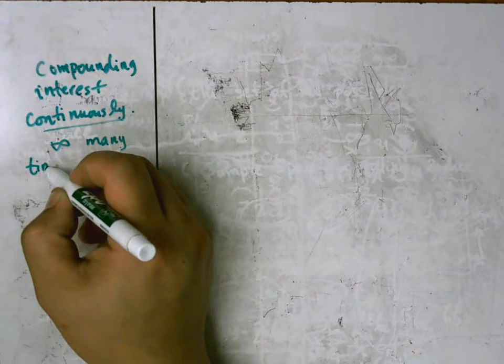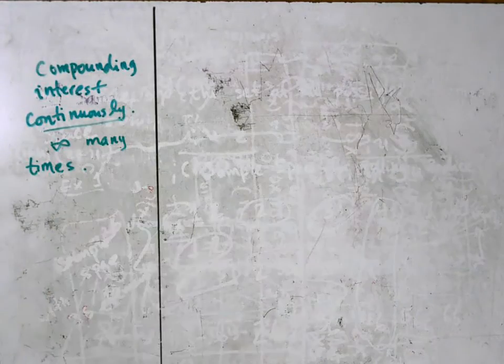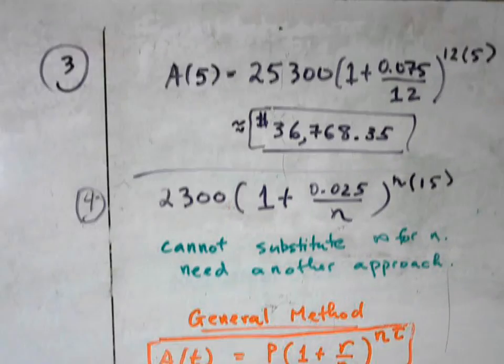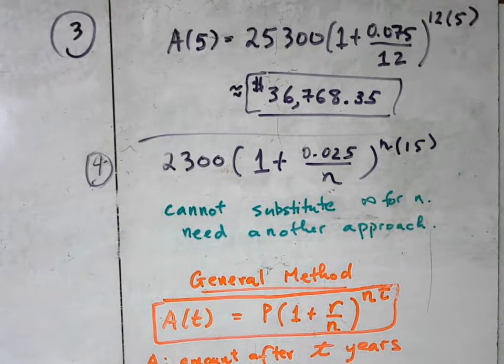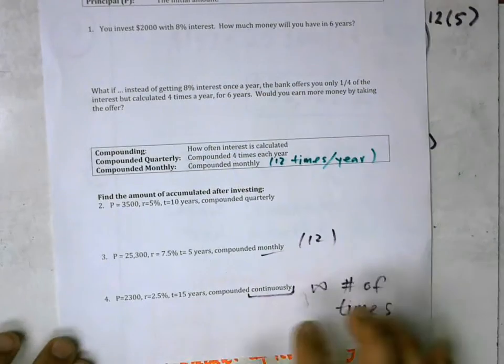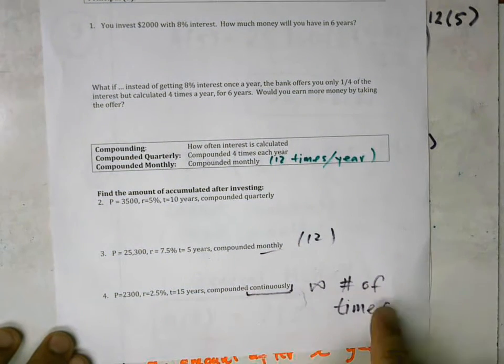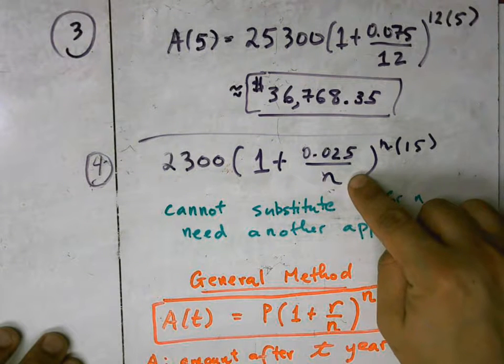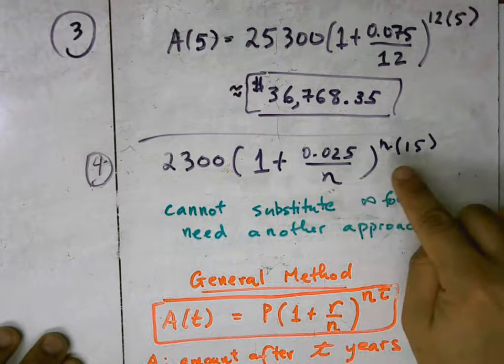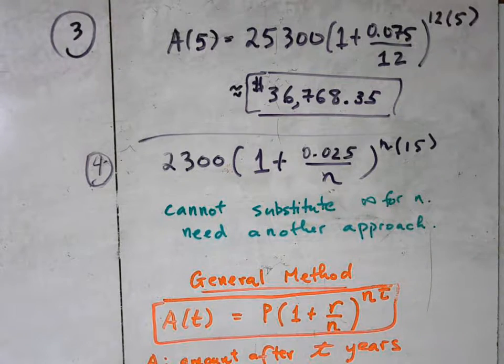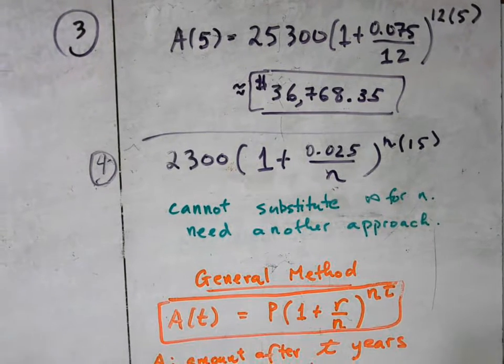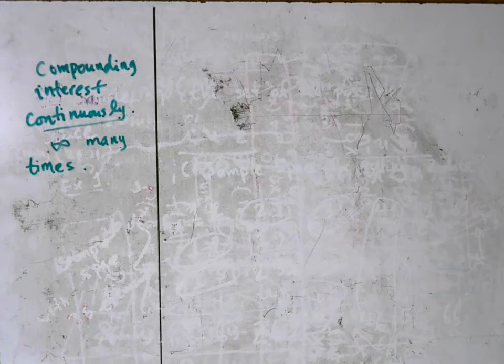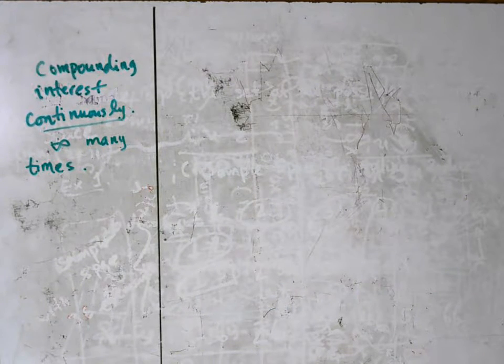I left the last video on sort of a cliffhanger and this video here will address some of the issues. We were working on a problem where we're supposed to compound money continuously an infinite number of times. We couldn't quite substitute infinity in for n, so we are going to tackle this problem in a slightly different way.